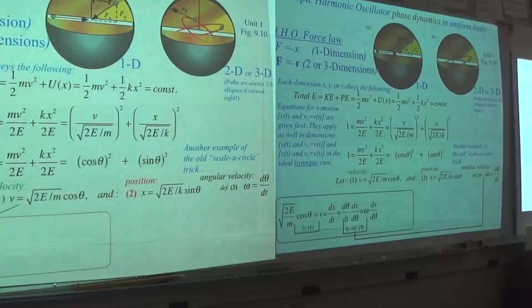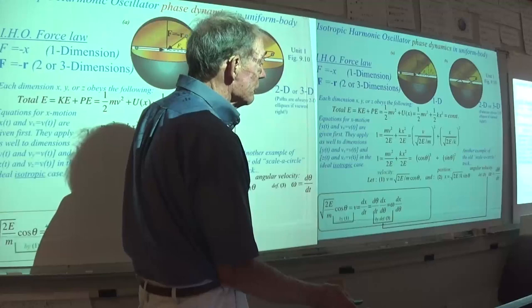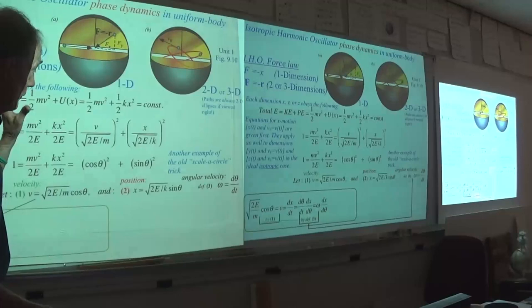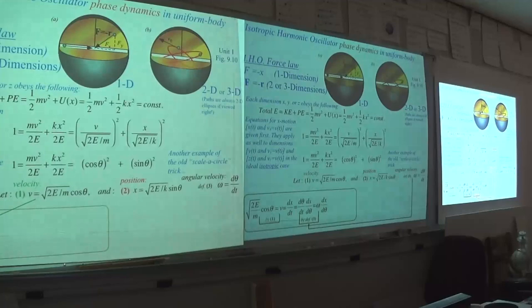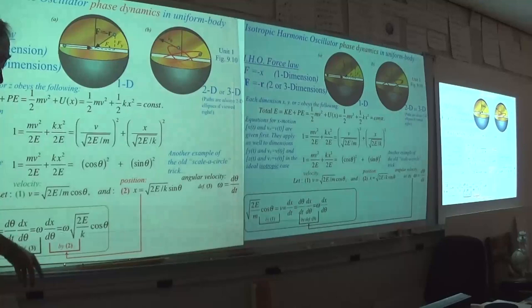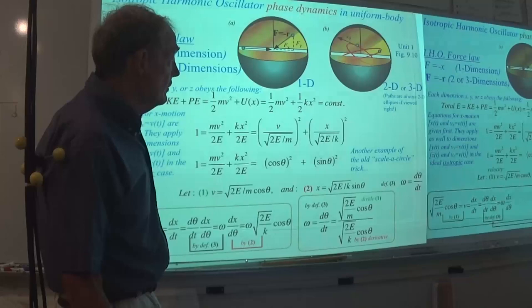That then leads us, just from the definition of angular velocity in terms of the phase angle, to the oscillator equations we're after. The first part involves just the ratio of the energy to the constant that defines the potential — the spring constant, if you will — of the mass inside the Earth, with gravity providing the oscillating force. The next thing is just to take the angular velocity and divide by two pi.